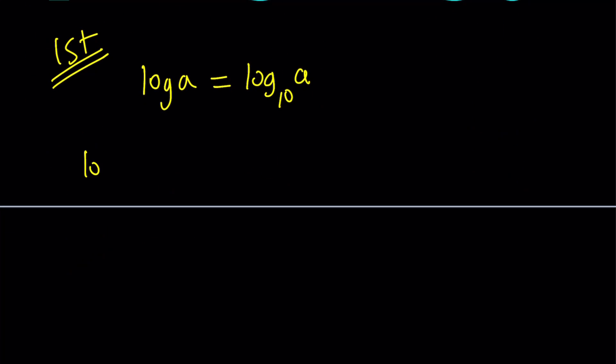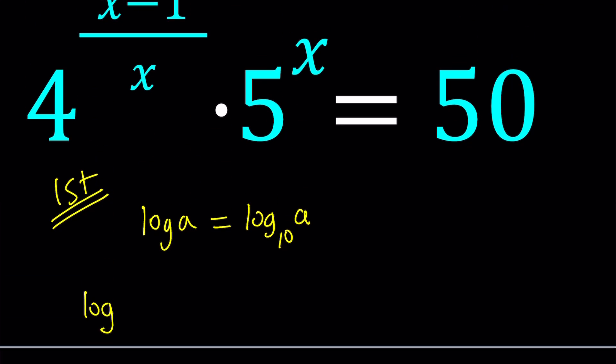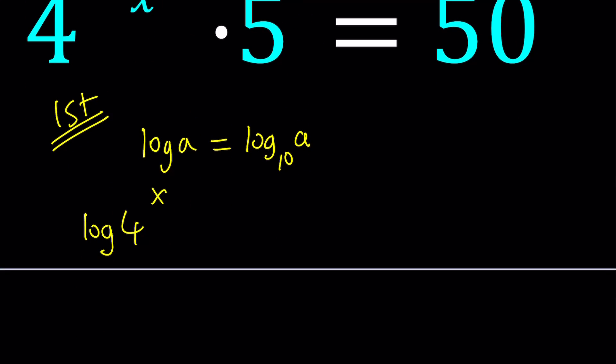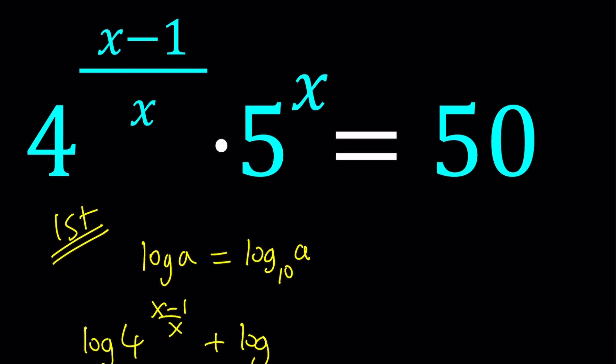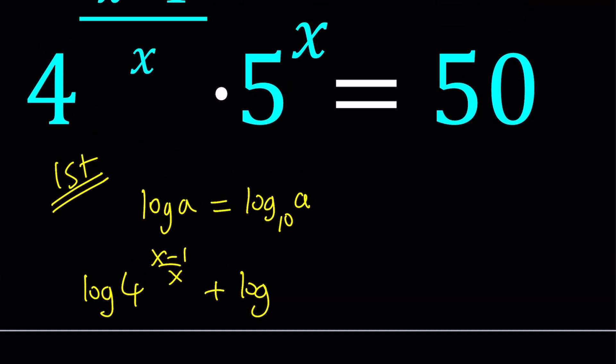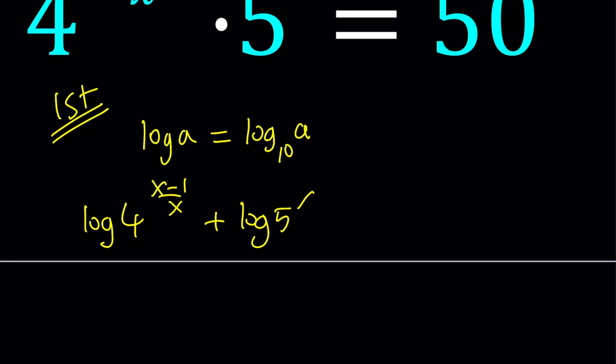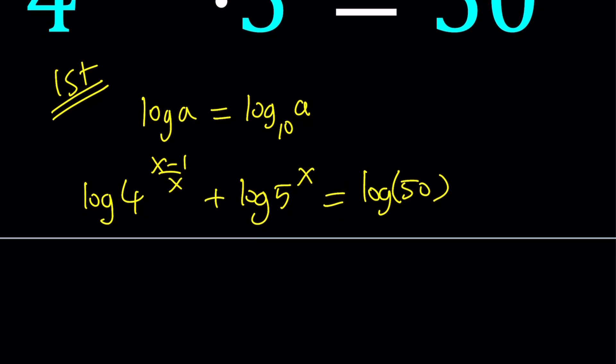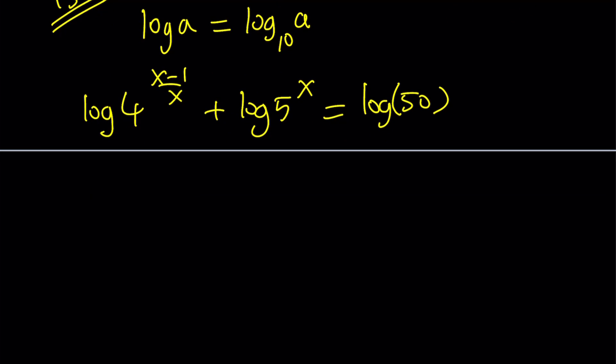Let's log both sides. When we log a product, it turns into a sum. I'm going to write this as a sum of two logs: log the first one and then plus log the second factor, which is 5 to the x. And of course you have to log 50 as well.